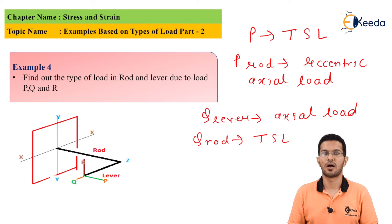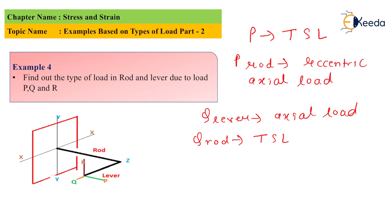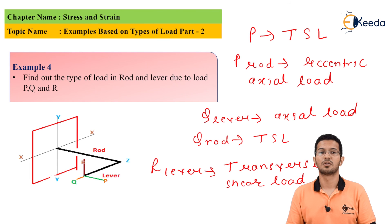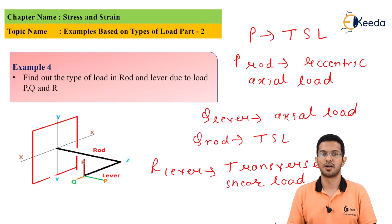For the lever, load R is parallel to the surface and passing through the axis. Hence, load R is transverse shear load for the lever. For the rod, load R is parallel to the surface but does not pass through the axis. Hence, load R is eccentric transverse shear load for the rod.